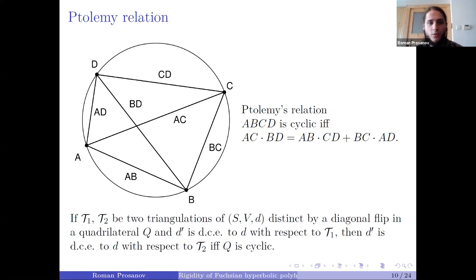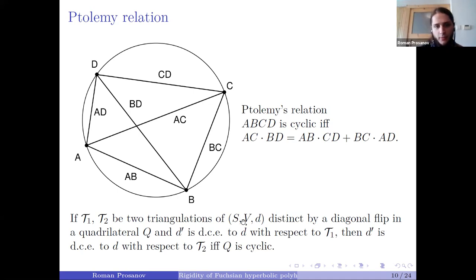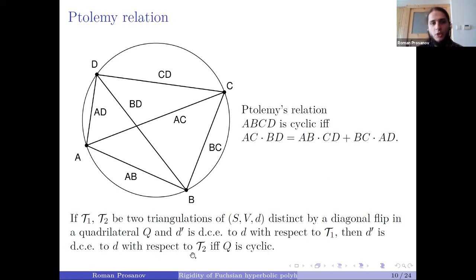From the Ptolemy relation one can extract the following: if I have two triangulations of a surface differing just by a diagonal flip in a quadrilateral, and I have a second metric discretely conformally equivalent to the initial metric with respect to the first triangulation, then it is discretely conformally equivalent with respect to the second triangulation if and only if this quadrilateral is cyclic. This shows that Delaunay triangulations suit really well to this definition.